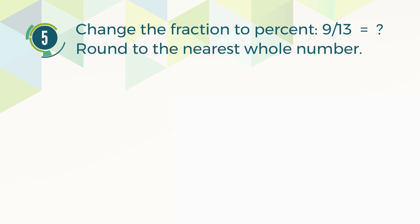Number 5. Change the fraction nine-thirteenths to percent. Round to the nearest whole number. A: 33%. B: 69%. C: 72%. D: 78%. The correct answer is B, 69%.